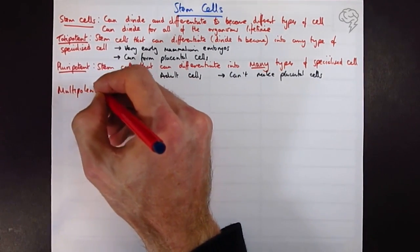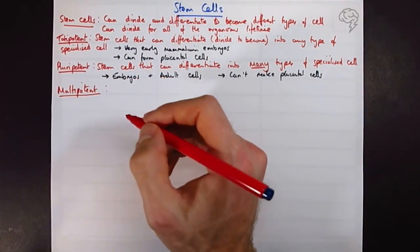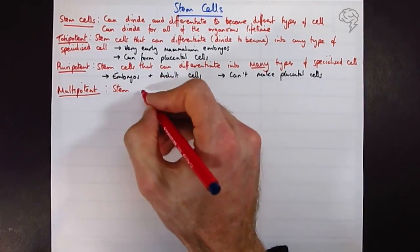Now moving down we've got multipotent. These are stem cells that can differentiate into a few types of specialized cells.